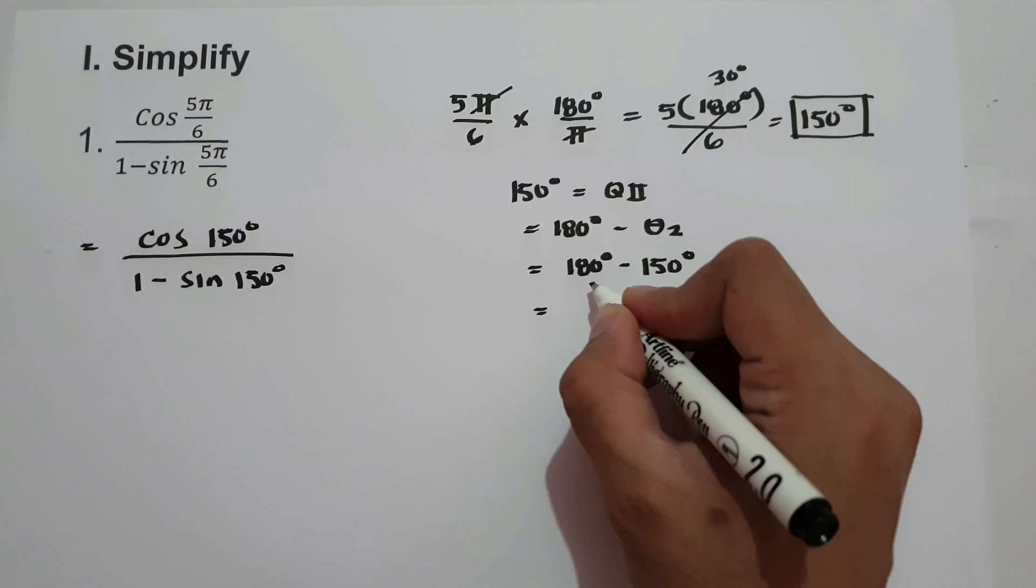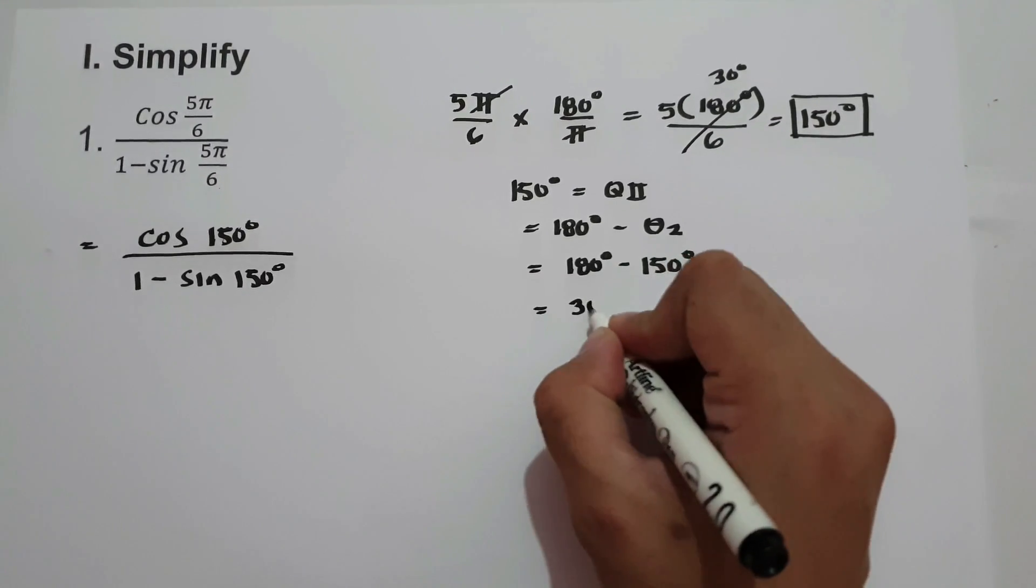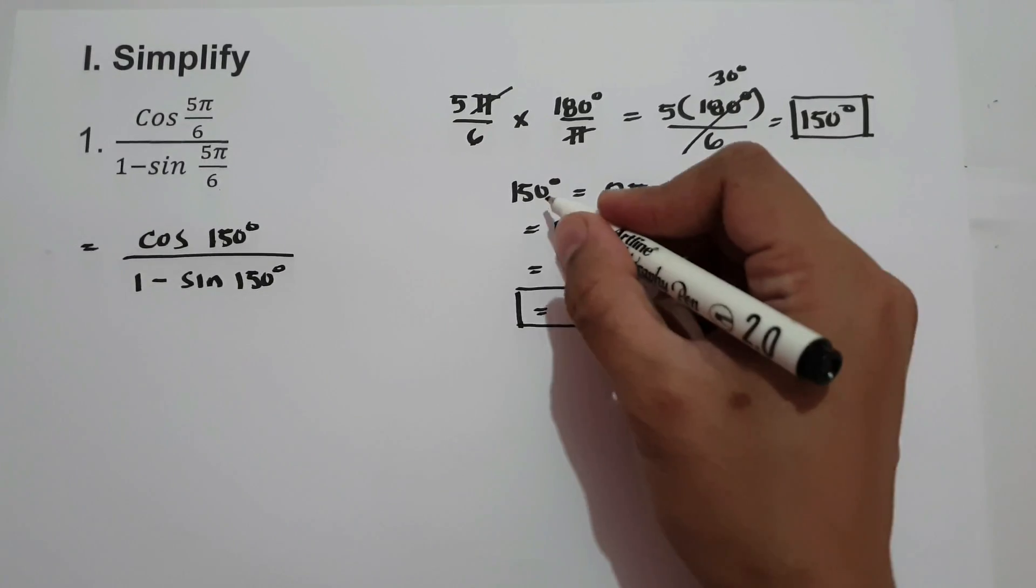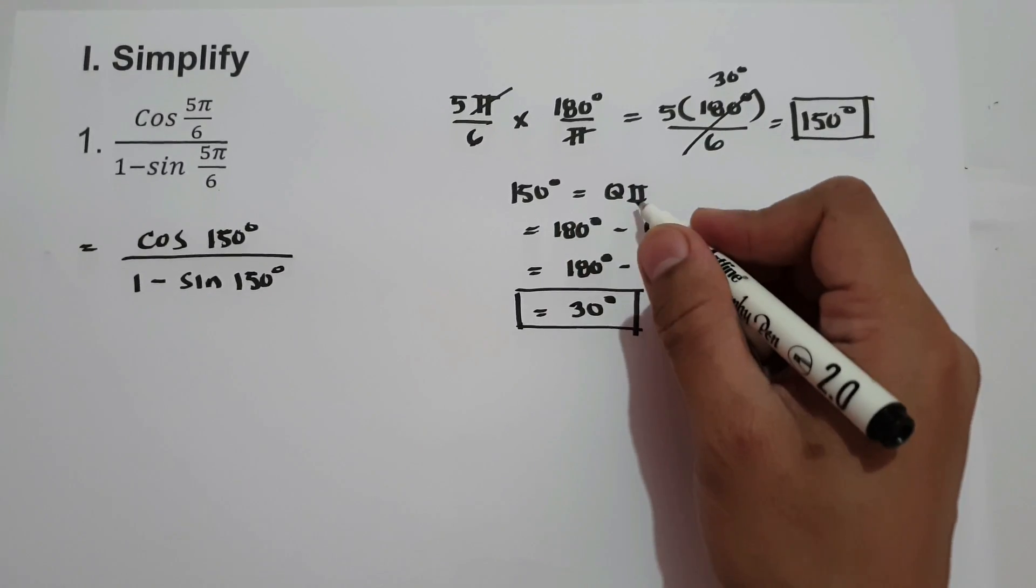So to simplify, we have 180 minus 150, that is 30 degrees. This will be the reference angle of 150 degrees in quadrant 2.